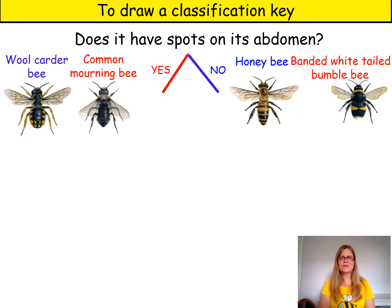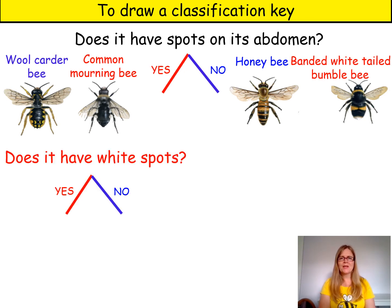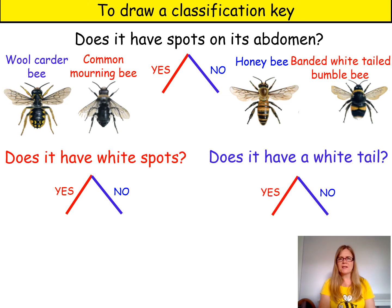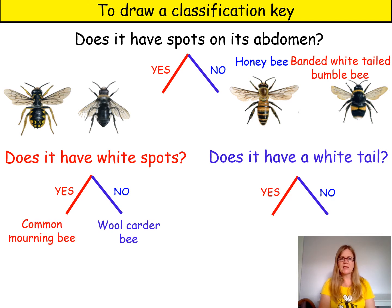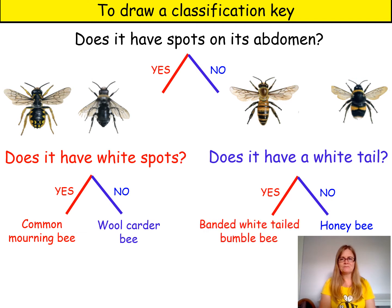Now I can ask my two other questions to separate them completely: does it have white spots, and does it have a white tail? Let's look at the wool carder bee — does it have white spots? No, it has yellow spots. However, the mourning bee does have white spots, so yes. Does the honeybee have a white tail? No. However, the banded white-tailed bumblebee does have a white tail, so yes. So my classification key works because it separates all the bees.